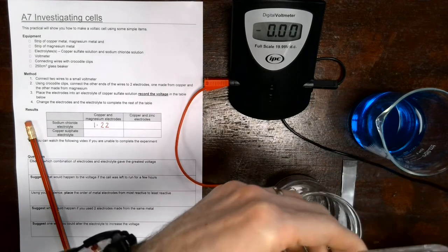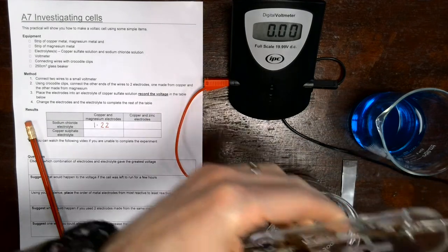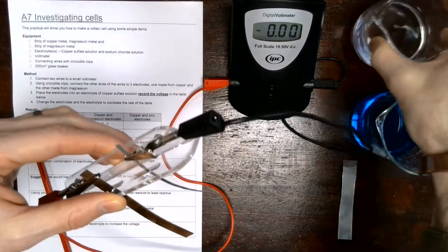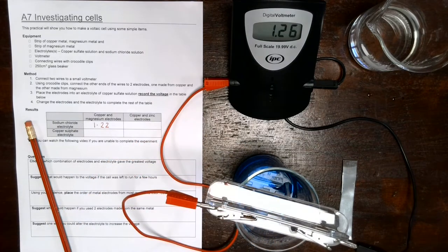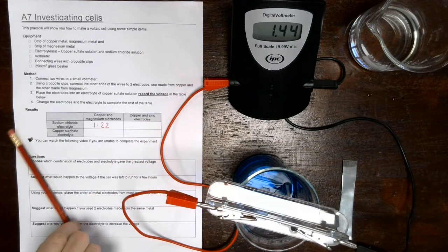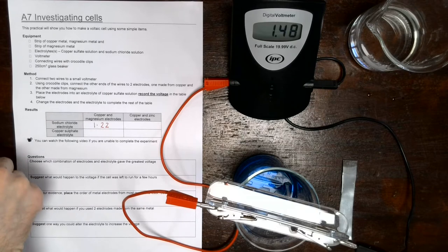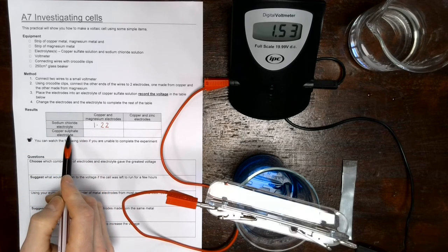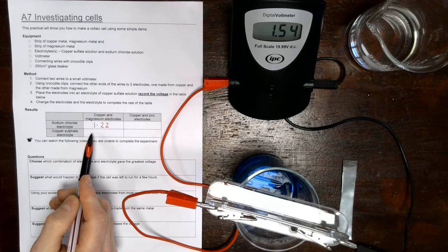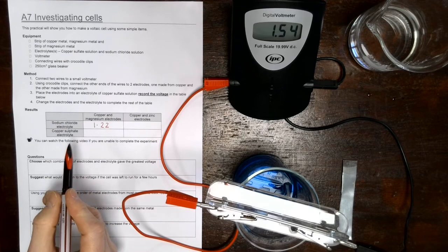What we're going to do now is keep the electrodes the same and we're going to swap the solution over for some copper sulfate. So place this into copper sulfate and now we need to record the values for this one. So we've now got copper and magnesium but we're going to use copper sulfate solution, so we're going to be filling out this box here, and we get a reading of 1.53.